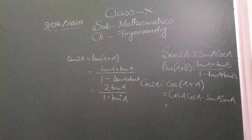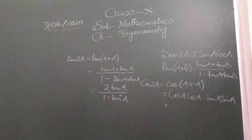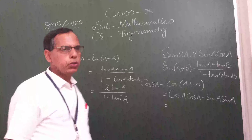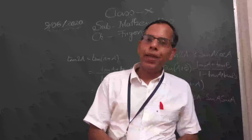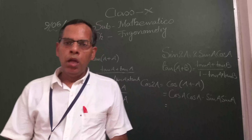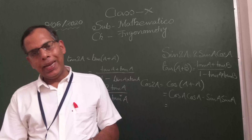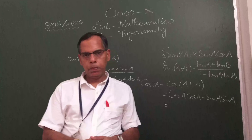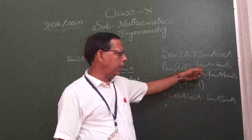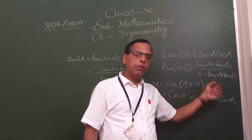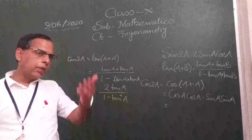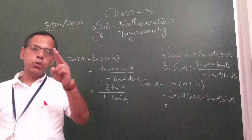Good morning students. In my last class we completed exercise 8.2. While doing exercise 8.2, we got a few formulas. First we got tan(a + b). tan(a + b) is equal to tan a plus tan b divided by 1 minus tan a times tan b.